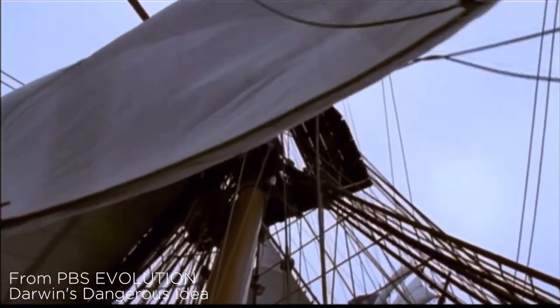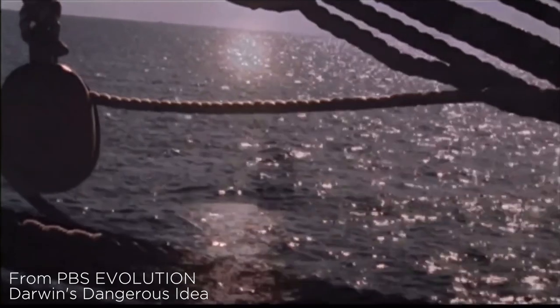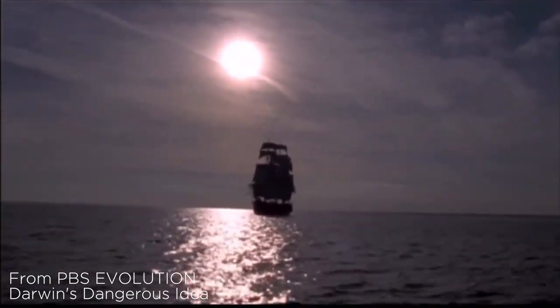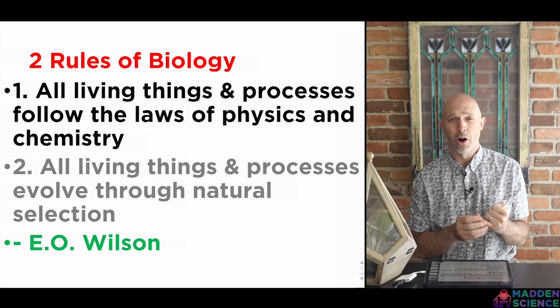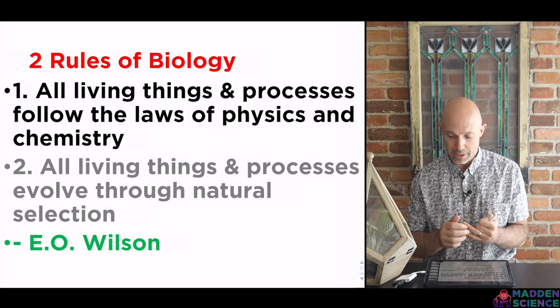"If I were to give a prize for the single best idea anybody ever had, I'd give it to Darwin for the idea of natural selection — ahead of Newton, ahead of Einstein — because his idea unites the two most disparate features of our universe: the world of purposeless, meaningless matter in motion on one side, and the world of meaning and purpose and design on the other." And my favorite living biologist, E.O. Wilson, says, "The two rules of biology are that all living things and processes follow the laws of physics and chemistry, and that all living things and processes evolve through natural selection."